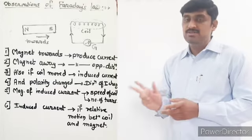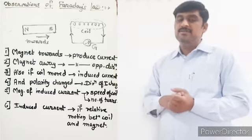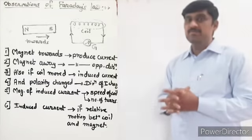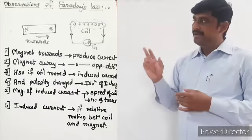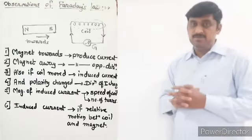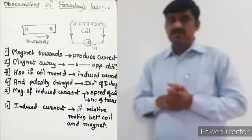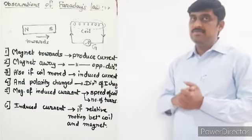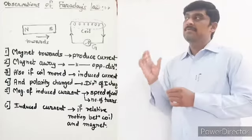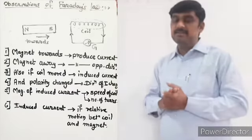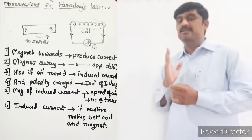The magnitude of the induced current depends on two things. The first thing is the speed of motion of the coil or magnet. The second thing is how many turns the coil has. For example, if there are 7 turns, and we increase the number of turns, there will definitely be an effect on the produced current.